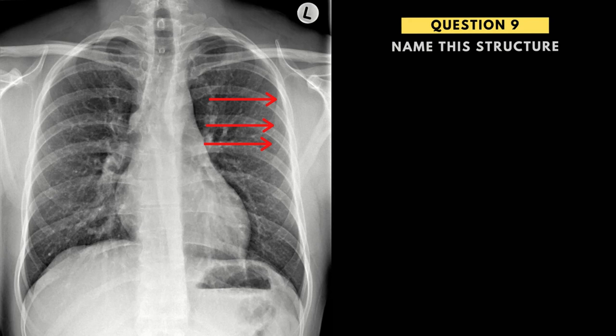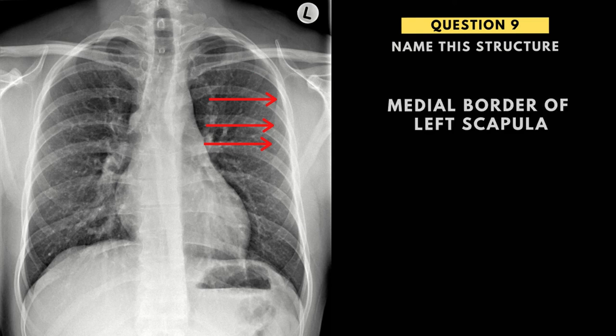Question number nine, we're asked to label this structure. The reason I've asked this is because this line — which we need to label — is often confused for pleural thickening or a pneumothorax. What this is, is actually the medial border of the left scapula. I can see the medial border here, coming down to the inferior angle, with the scapula coming up. It's really important not to confuse this for pathology — this is normal anatomy, where the rhomboid major and rhomboid minor attach.